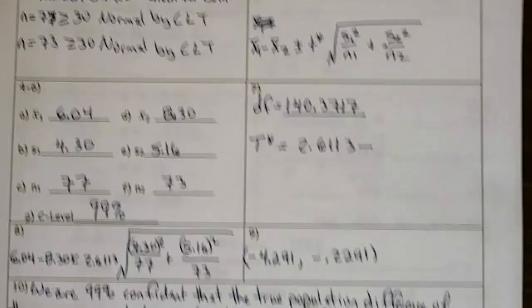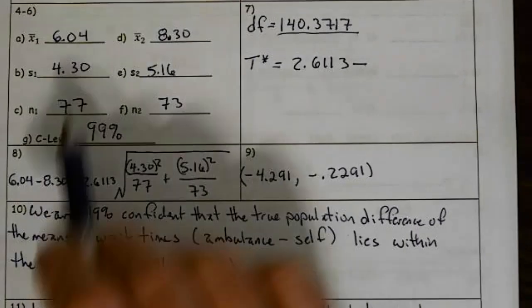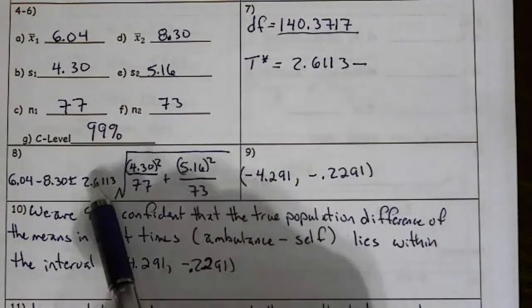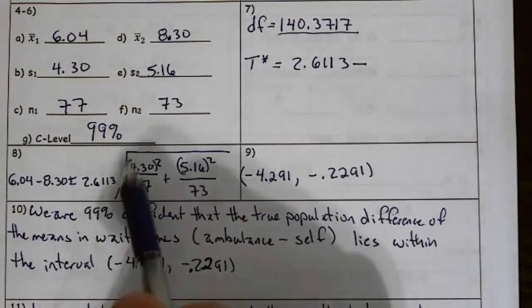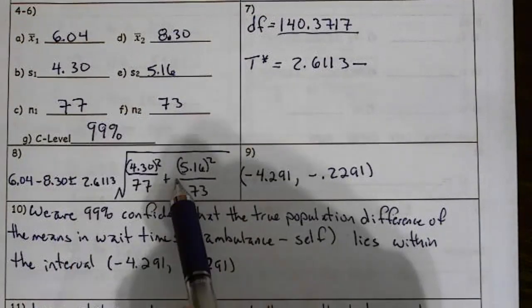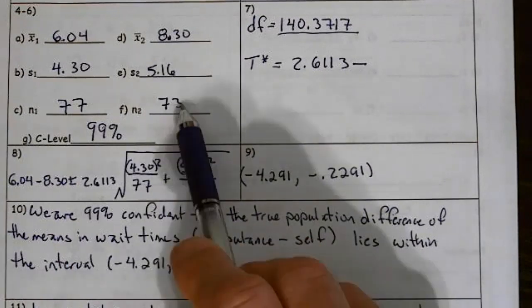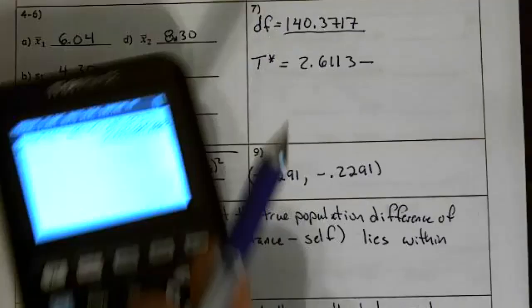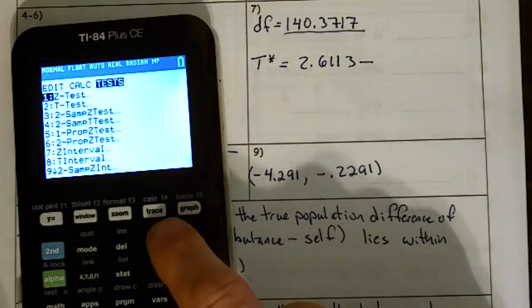At this point, I can go ahead and start plugging all that information into my formula. And sure enough, there's 6.04, 8.3. There is our 2.6113 for our T star value. My standard deviation of 4.3 over the sample size of 77, plus 5.16 squared over the sample size of 73. And as noted before, we got this value by going stat test.